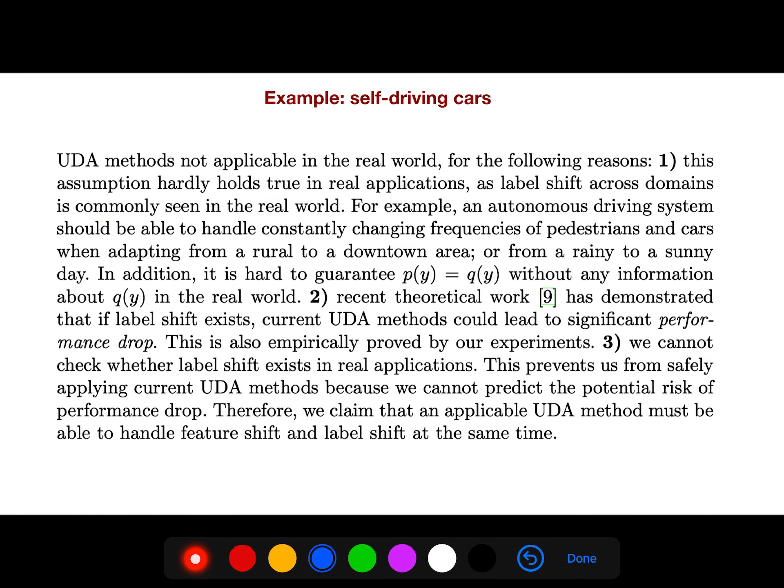An example could be self-driving cars. For example, autonomous driving systems should be able to handle constantly changing frequencies of pedestrians and cars when adapting from a rural to a downtown area or from a rainy to a sunny day. So it is hard to guarantee that their label distributions are the same without any information about q(y) in the real world.